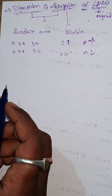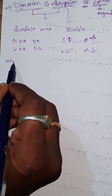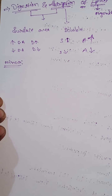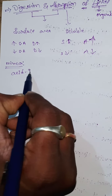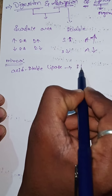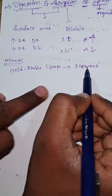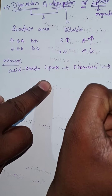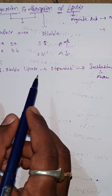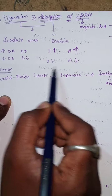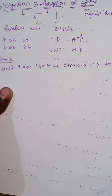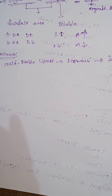Now, what is the minor digestion of lipids? In minor digestion, digestion of lipids is initiated in the stomach, catalyzed by the acid-stable lipase enzyme. This enzyme is present in our stomach and catalyzes the initiation — that is, the starting — of the digestion process.